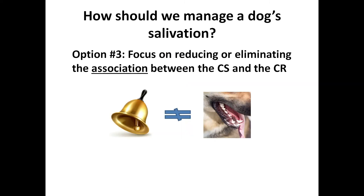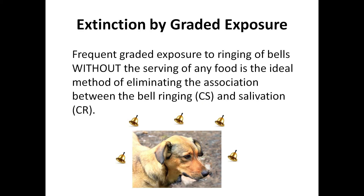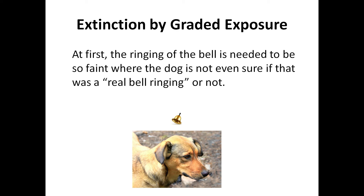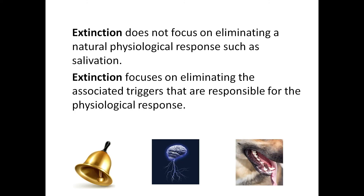Option three: focus on reducing or eliminating the association between the CS and the CR. Extinction by graded exposure — frequent graded exposure to ringing of bells without the serving of any food is the ideal method of eliminating the association between bell ringing, CS, and salivation, CR. At first, the ringing of the bell needs to be so faint that the dog isn't even sure if it was a real bell ringing or not. Extinction doesn't focus on eliminating a natural physiological response such as salivation; it focuses on eliminating the associated triggers responsible for the physiological response.